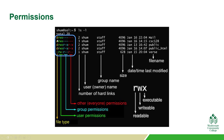The very first column in the yellowish color is our file type. If it says D, that stands for directory. If it's just a hyphen, that is a file. So that's pretty much how this breaks down, but again we're going to focus on the permissions area.